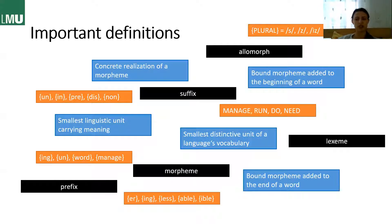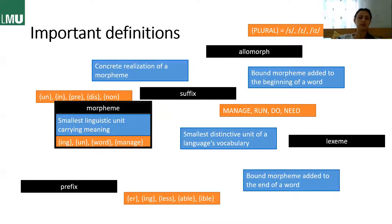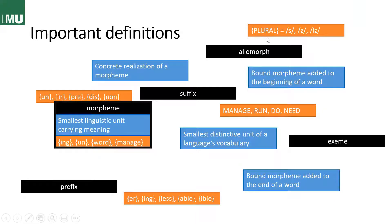So here we have a small jigsaw puzzle. Those who are in my group and have the slides can puzzle it together yourselves if you like, but I will just go through them and sort them together now. The first group we have is the morpheme — the basic unit of morphology, the smallest linguistic unit carrying meaning. Examples would be -ing, un-, 'word,' or 'manage.'